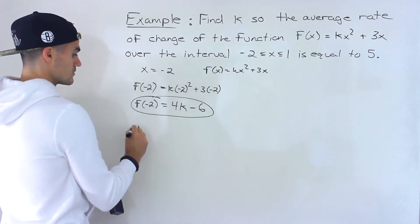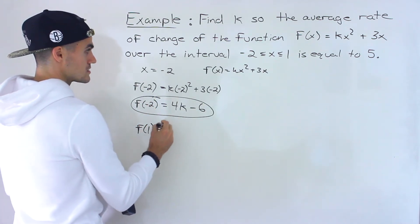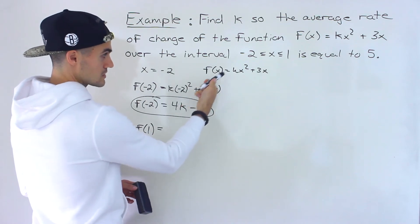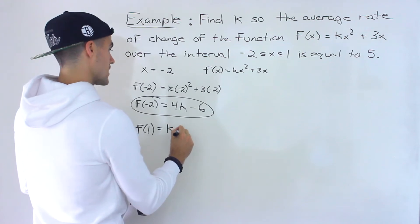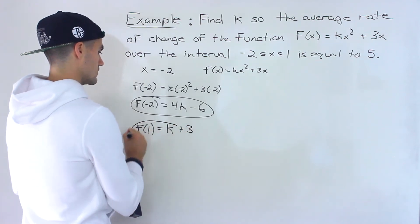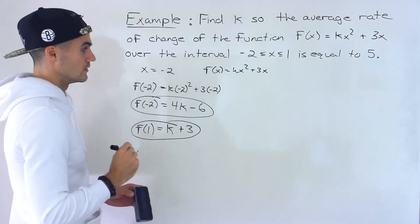And then we'll also need f(1). So plugging in 1 for the x values, 1 squared is 1 times k is just k. 3 times 1 is just 3. So that's f(1).